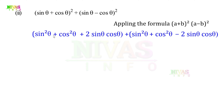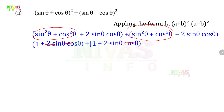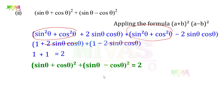Since sin²θ + cos²θ = 1, we replace it with 1 in both groups. So we get (1 + 2sinθ·cosθ) + (1 - 2sinθ·cosθ). The +2sinθ·cosθ and -2sinθ·cosθ cancel. Remaining is 1 + 1 = 2. So the answer is 2.